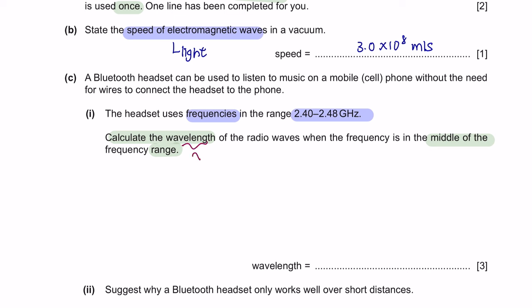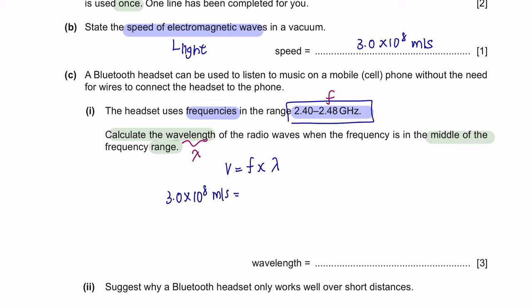Okay, so you are asked to calculate the wavelength and you are given with the frequency. The formula related to frequency and wavelength is V equals frequency times lambda. Lambda here is the wavelength. The speed that we are going to use here is based on the speed of electromagnetic waves. The frequency is already given. However, it is given in range. So you've got two values. But they specifically mention that you have to take the middle. And the middle of 2.4 and 2.48 is 2.44.